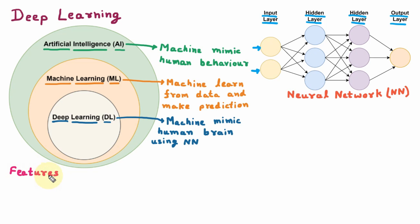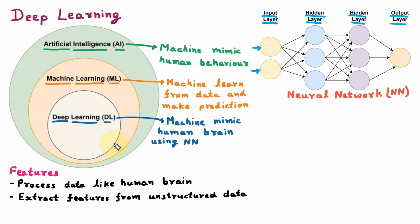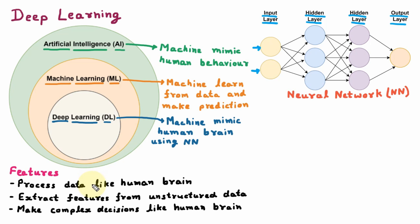Now we are learning the features of Deep Learning. The first one is that it processes data like the human brain — just as we analyze data, Deep Learning can analyze it, process it, and provide the solution. Second, it extracts features from raw or unstructured data, and can handle any type of data. Next, it makes complex decisions like the human brain — Deep Learning can solve various complex problems, like finding a fraud or detecting a disease.